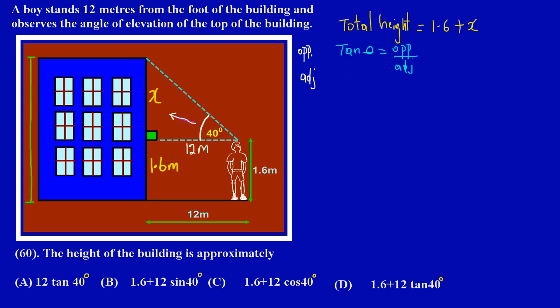So I can now say then that tan of 40 degrees is equal to the opposite side, which is x, over my adjacent side, which is 12 meters. Now if you notice, my friends, 12 is dividing the side and I want to make x the subject. I want to find out what x is.